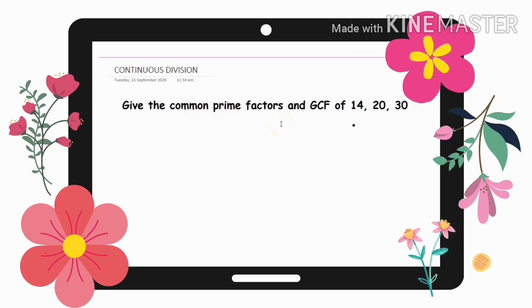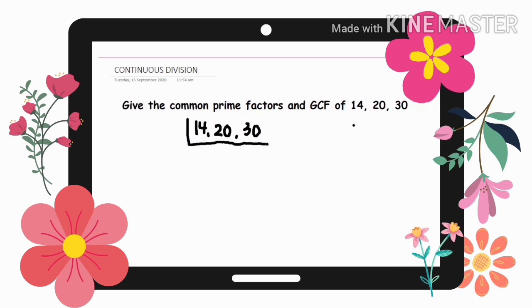So, let's try again another example. Let's give the common prime factors ng GCF of 14, 20, and 30. So, the first step is write the numbers. So, write muna natin yung mga numbers. So, we have 14, 20, and 30. So, we will use continuous division or inverted division. Then, second step, think of a prime factor. So, again, ano yung prime? So, again, ano yung prime? Ito yung isa lang yung factor niya.